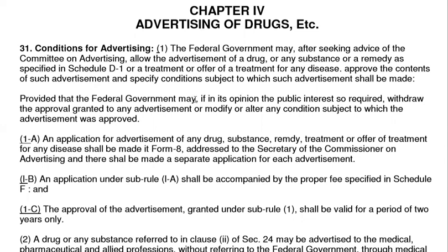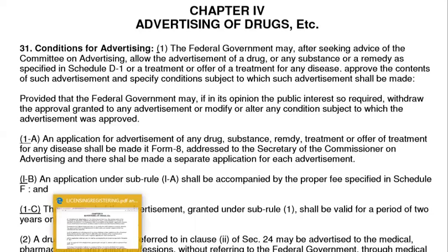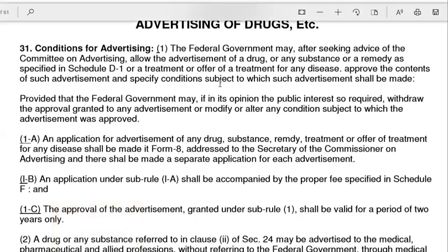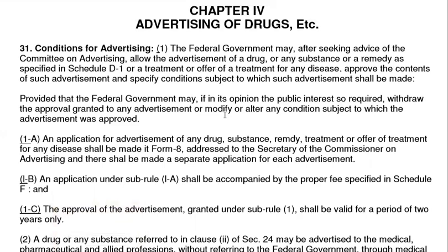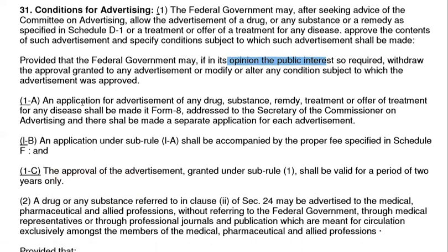The federal government may, in its opinion of the public interest, require withdrawal of an approval granted. It may also approve, modify, or alter conditions of the advertisement. Modifications to the application can be given, and the advertisement will be approved if it is in the opinion of the public interest.